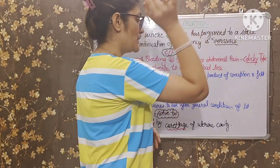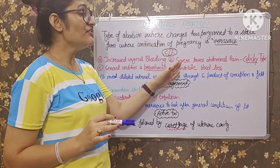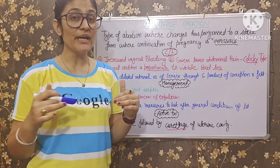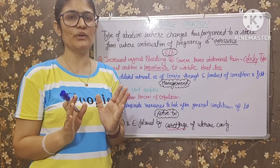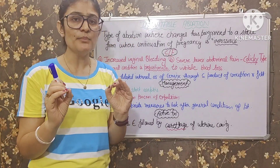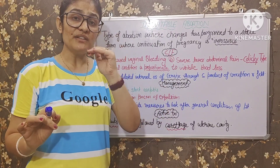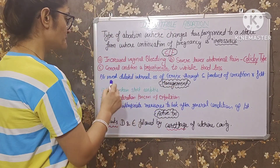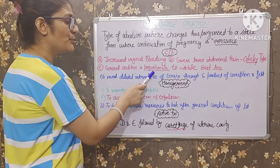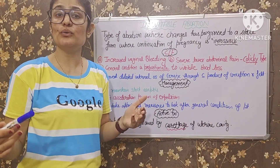Second clinical feature: severe lower abdominal pain, colic ki type. Patient ko severe bleeding hone ke saath severe lower abdominal pain hone lagega, uske lower abdomen mein bahut tez pain hone lagega — colic ki type ka pain, itna zabardast pain ki patient ro bhi sakta hai.